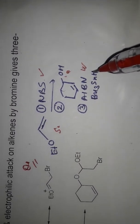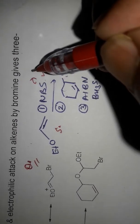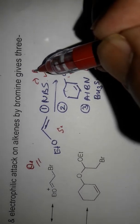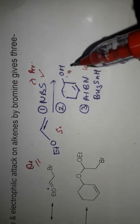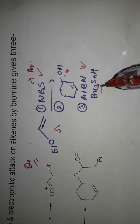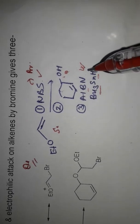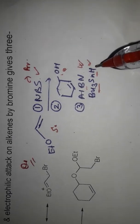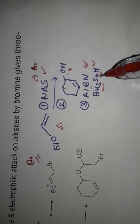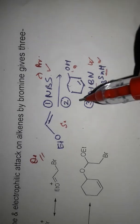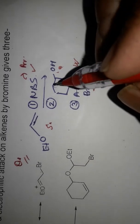The third reagent is tertiary butyl tin hydride. NBS is a bromine source, and AIBN along with tertiary butyl tin hydride — AIBN initiates and promotes a free radical reaction.